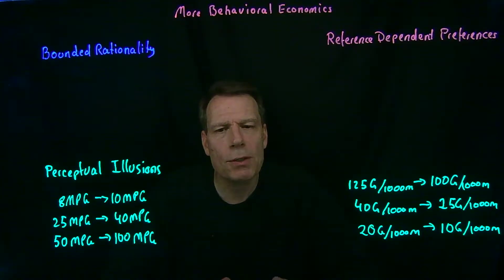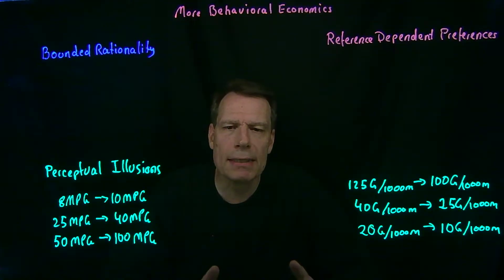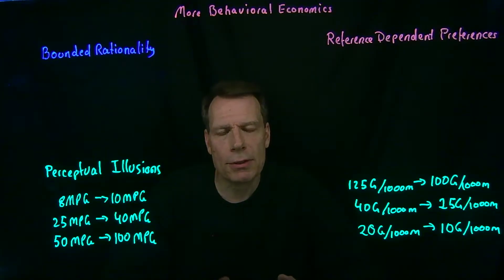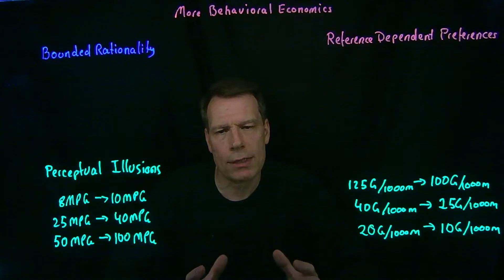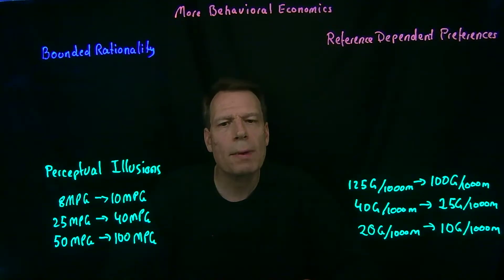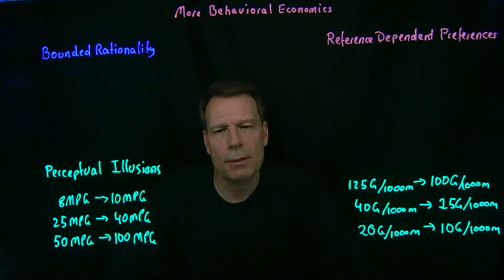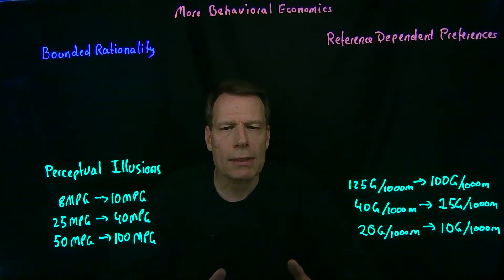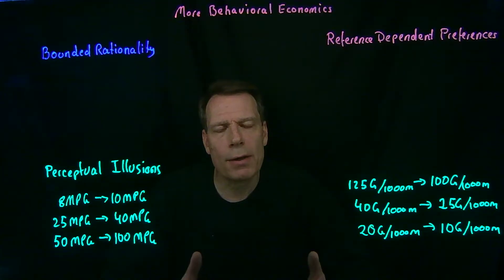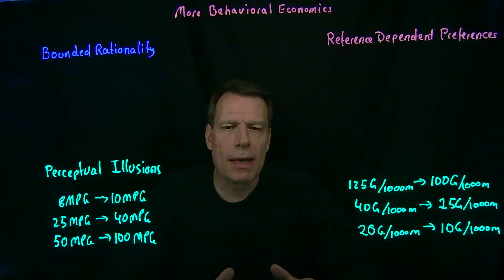Typically in economics, we assume that people can make the sort of basic calculations necessary to make rational decisions, or at the very least that they have enough of an intuitive grasp about those calculations to make approximately rational decisions. But that doesn't always seem to be the case. In some circumstances, it appears that our brain is wired in ways that make it difficult to grasp the intuition behind even relatively simple calculations.